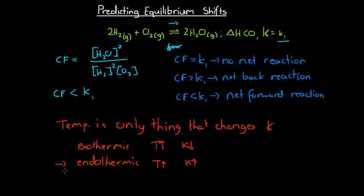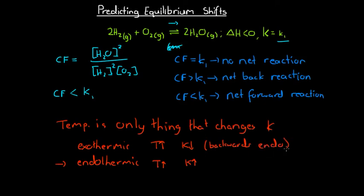The endothermic case makes quite a lot of sense. Endothermic reactions absorb energy, so if we increase the temperature we're increasing the energy available to allow the endothermic forward reaction to occur. If there's more forward reaction happening, the K value will increase. This also explains the exothermic case, because the backwards reaction for an exothermic process is itself endothermic. So if there's more energy around, there's more energy for the backwards endothermic reaction to occur, meaning a lower equilibrium constant.